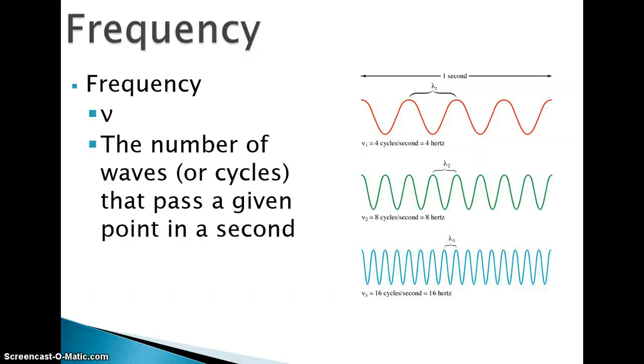Frequency is characterized by the symbol nu. It's not a V. It's sort of a cursive V, because V stands for velocity. It's the number of waves or cycles that pass a given point in a second. So if we look, waves that have a large wavelength have a low frequency. And waves that have a short wavelength have a high frequency.